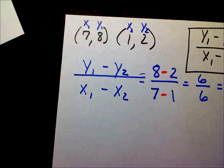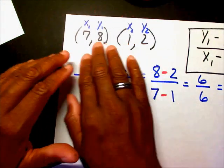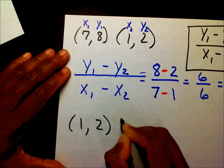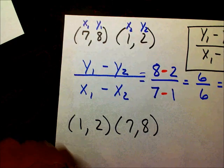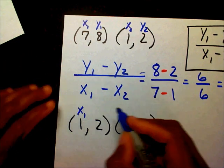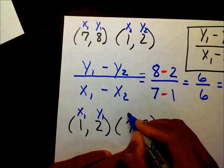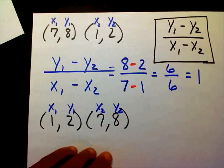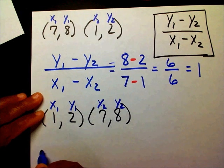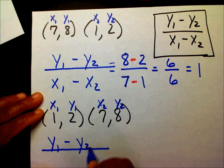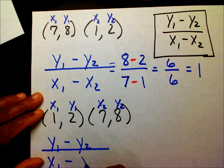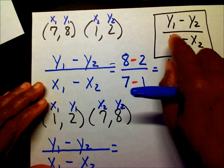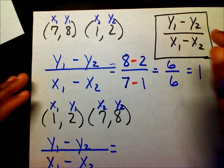I want to prove to you that it really does not matter which one is your first or your second. Let's say I had (1, 2) and (7, 8) — with (1, 2) as the first pair. Now this is my first X and first Y, and (7, 8) is my second X and second Y. A lot of people get caught up on making sure you have your first and second. It really does not matter — let me show you why.